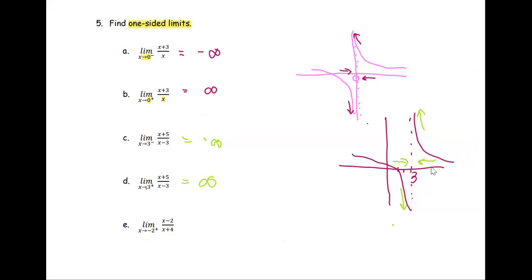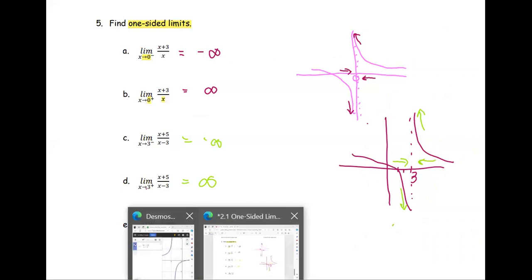For the last problem, limit of the function x minus 2 divided by x plus 4, as x approaches negative 2 from the right side. Or the right hand limit of this function. Use Desmos to plot the graph.